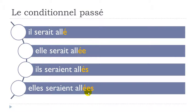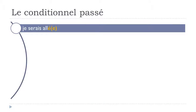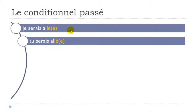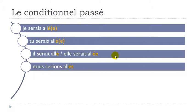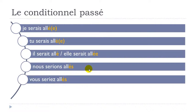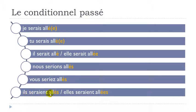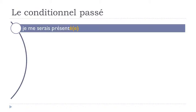Here's the full conjugation with aller and être: je serais allé, tu serais allé, il serait allé, elle serait allée, nous serions allés, vous seriez allé, ils seraient allés, elles seraient allées. The liaison makes it sound more natural — je serais allé.